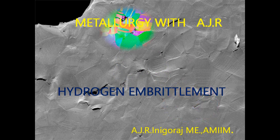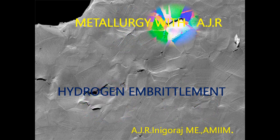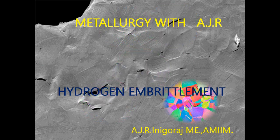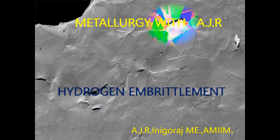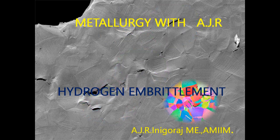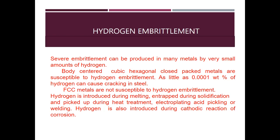Welcome to Metallurgy with AJR — small concepts in an easy and simple approach. Here I am going to discuss about hydrogen embrittlement. Severe embrittlement can be produced in many metals by very small amounts of hydrogen. BCC and HCP metals are susceptible to hydrogen embrittlement.